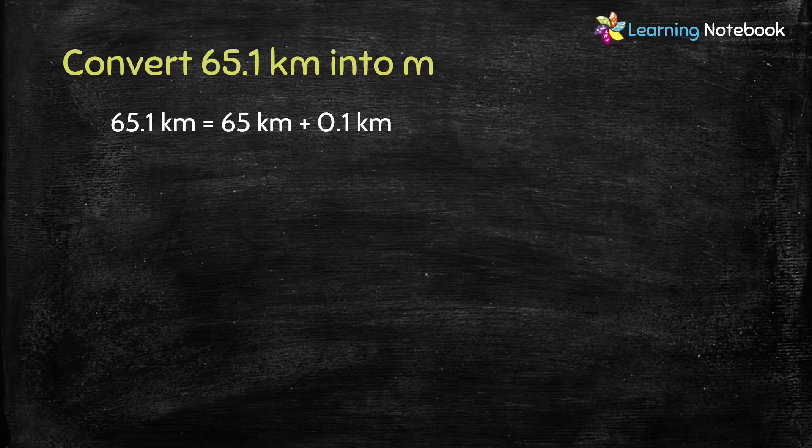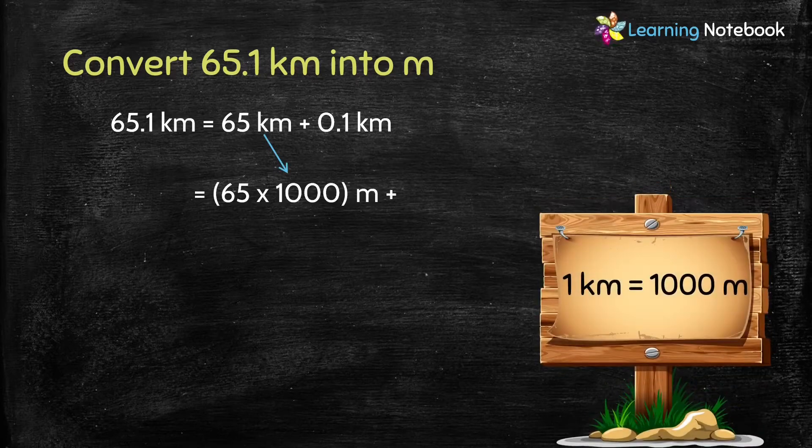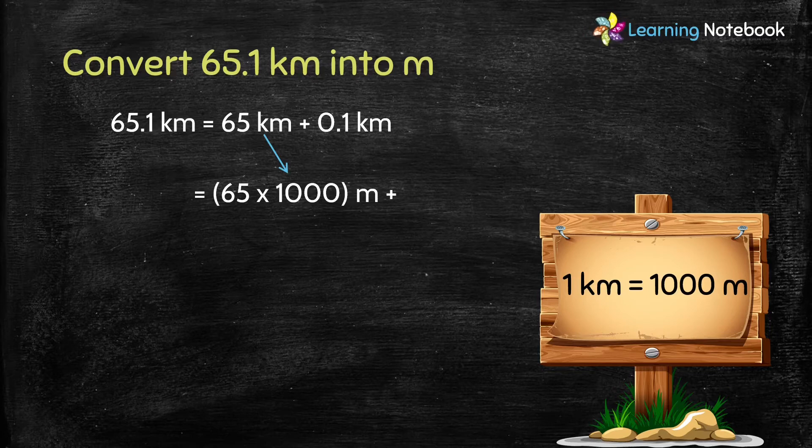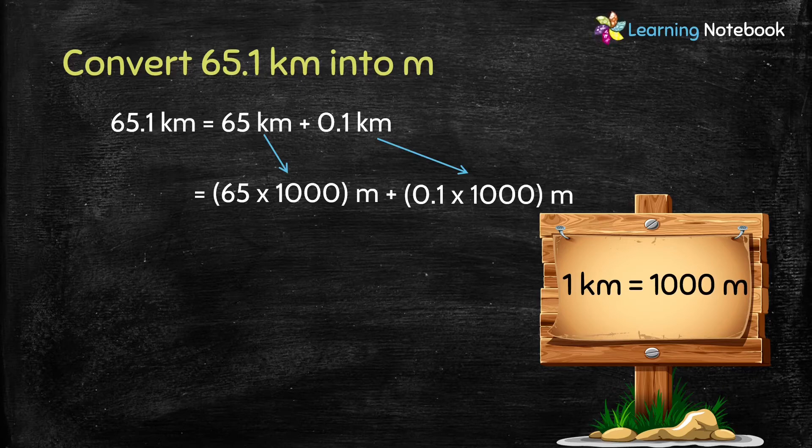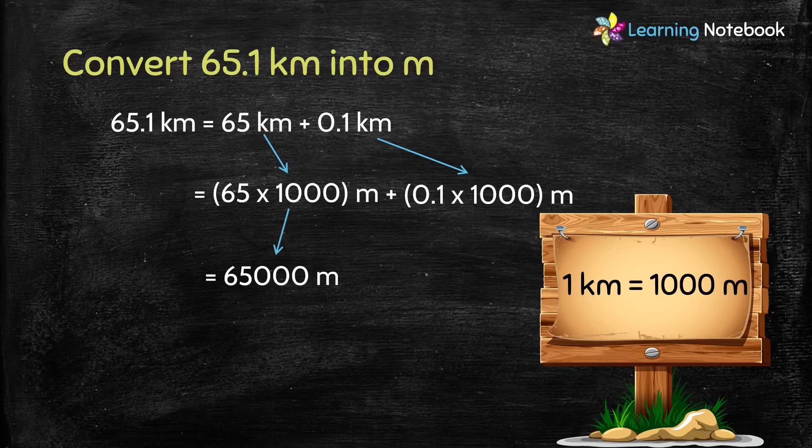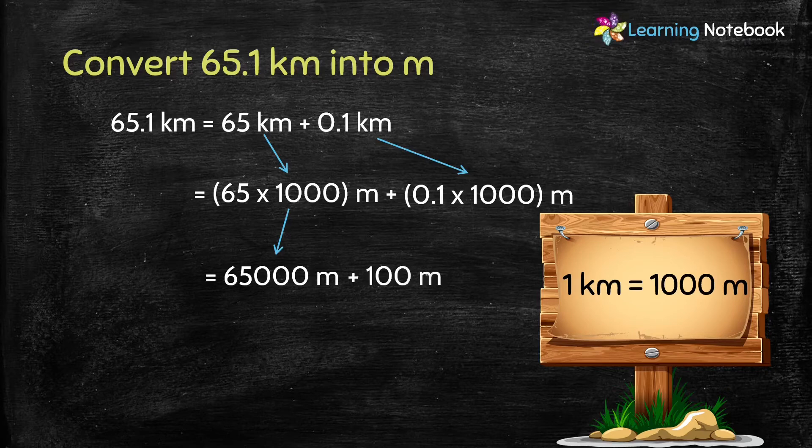We know, 1 kilometer equals to 1000 meter. So, 65 kilometer would be equal to 65 into 1000 meter. Similarly, 0.1 kilometer would be equal to 0.1 into 1000 meter. Now, let's multiply 65 into 1000 equals to 65,000. And 0.1 into 1000 equals to 100.